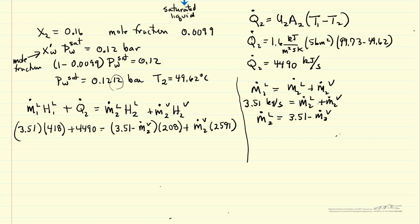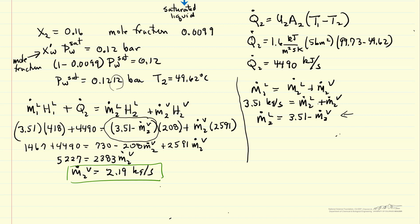So note that I haven't put the units in, but the mass flow rates are in kilograms per second. The values from the steam tables for enthalpies are kilojoules per kilogram, and then the Q value is in kilojoules per second. So each of these terms is in kilojoules per second. Also note that I substitute here for the mass flow rate of the liquid leaving the second evaporator in terms of mass flow rate of the vapor that we calculated from the mass balance. So just algebra rearranging, mass flow rate of vapor is 2.19 kilograms per second. Since two flow rates add up to 3.51, the mass flow rate of the liquid is 1.32 kilograms per second.